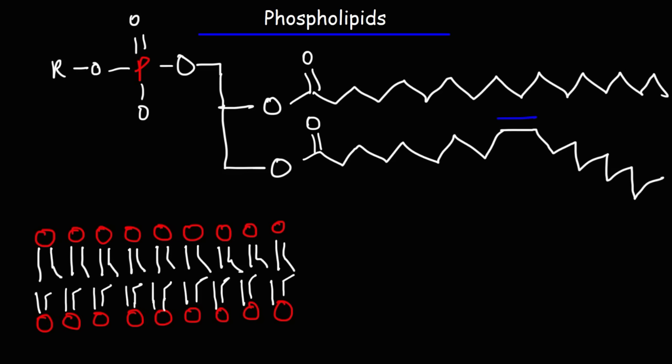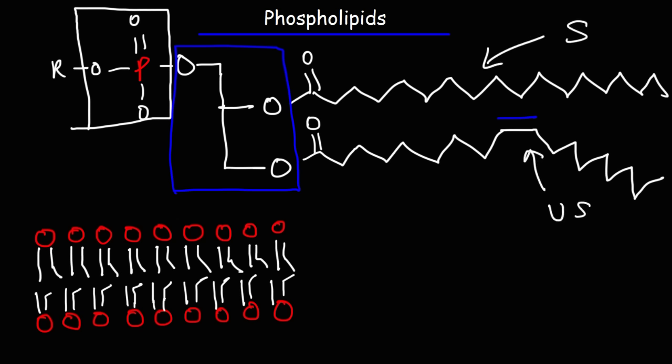Now let's move on to our next category, phospholipids. These are lipids with a phosphate group. So a phospholipid is made up of a phosphate group, a glycerol molecule, and two fatty acid chains. In this example, we have a saturated fatty acid and an unsaturated fatty acid. The R group does contain a nitrogen atom, by the way. So phospholipids contain carbon, hydrogen, oxygen, phosphorus, and nitrogen.